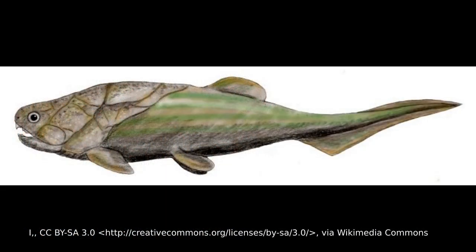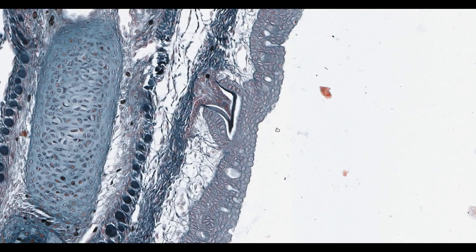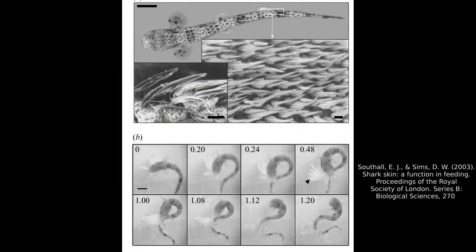Early jawed fish like this placoderm had large bony plates covering their skin for protection. Similarly, the scales of sharks are made of bone but there are a more refined version which have evolved to better perform their functions, principally to reduce friction drag with water and make swimming easier. Additionally, scales provide protection against abrasion, predators, and parasites. It's even been shown that in juvenile dogfish the scales play a role in feeding behaviours.